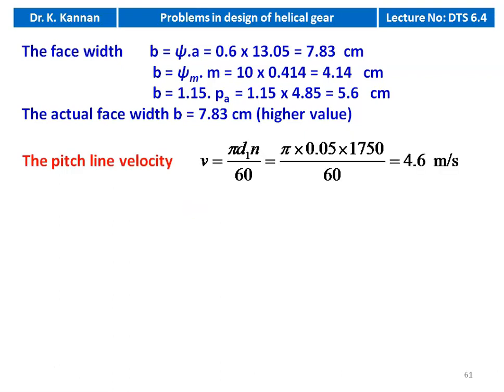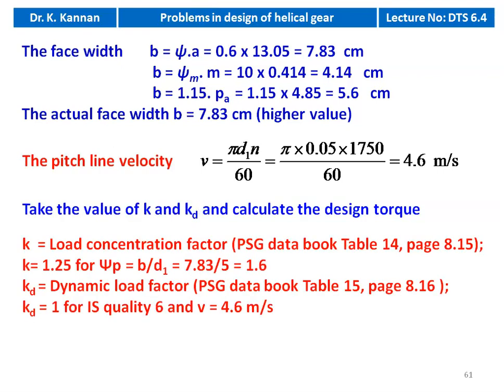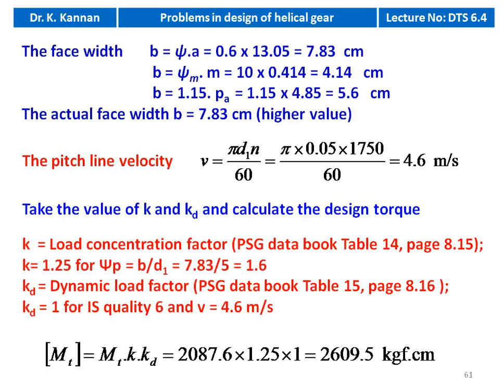For checking, pitch line velocity: V = π × D1 × N / 60 = π × 0.05 × 1750 / 60 = 4.6 m/s. Load concentration factor K = 1.25 for psi_P = B/D1 = 1.6. Dynamic load factor KD = 1.0 for IS quality 6 and velocity 4.6 m/s. Design torque for designed gear: MT(design) = 2087.6 × 1.25 × 1 = 2609.5 kgf·cm.